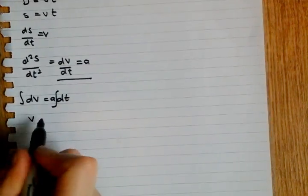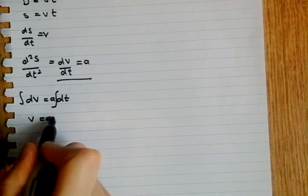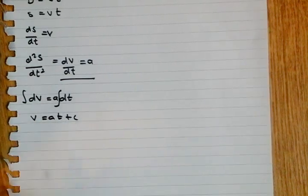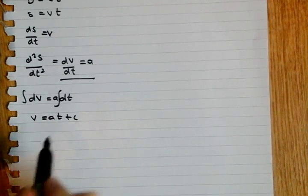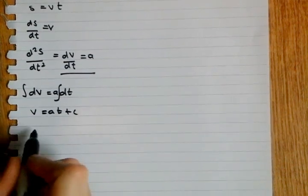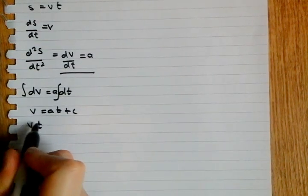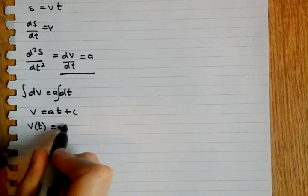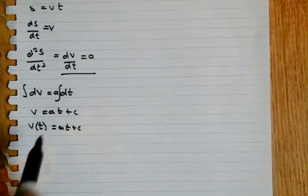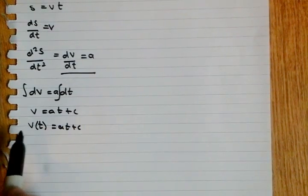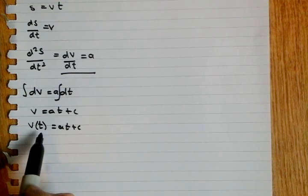Solving this, we get V is equal to AT plus C, the constant of integration, because we don't have any limits. Now, I can rewrite this as V(T) in brackets is equal to AT plus C. This T in brackets means that the velocity is dependent on the time.